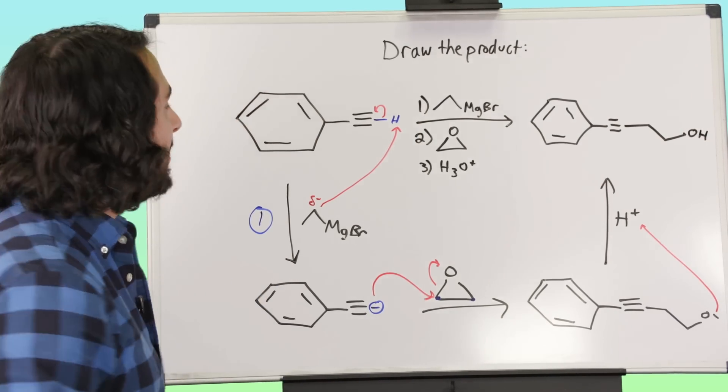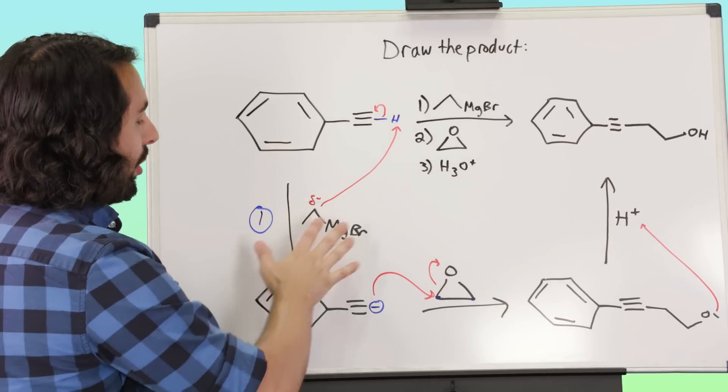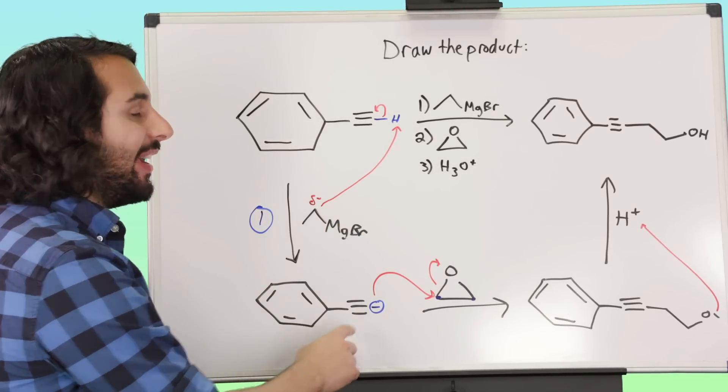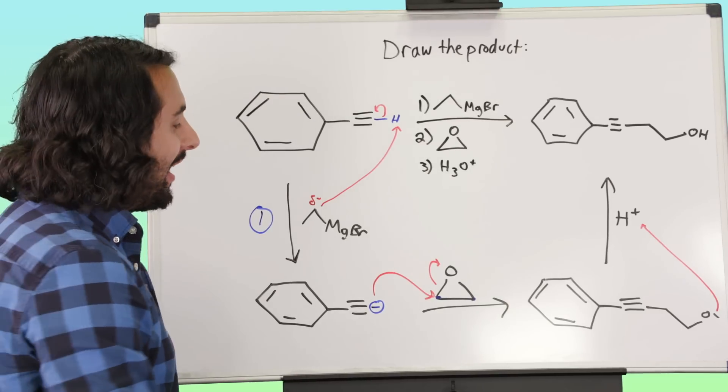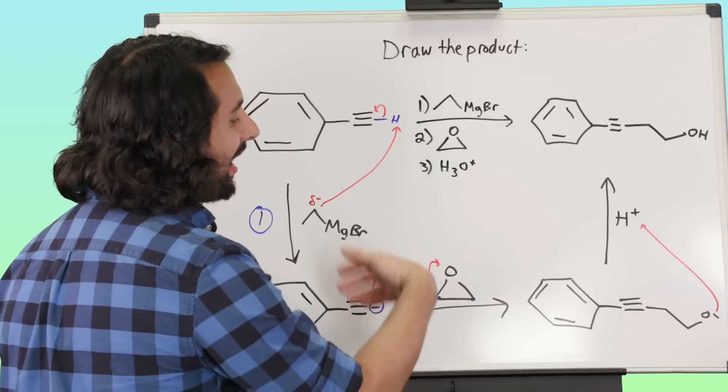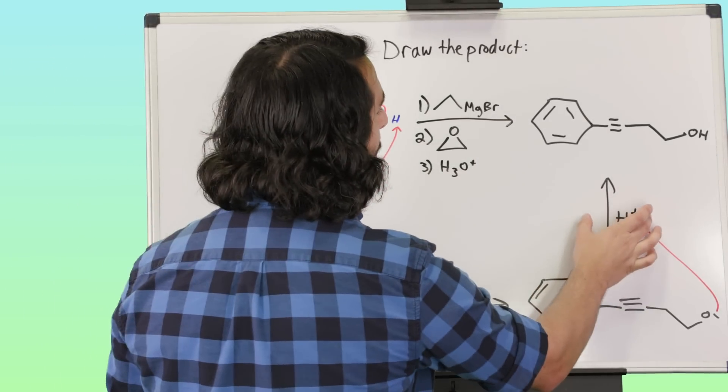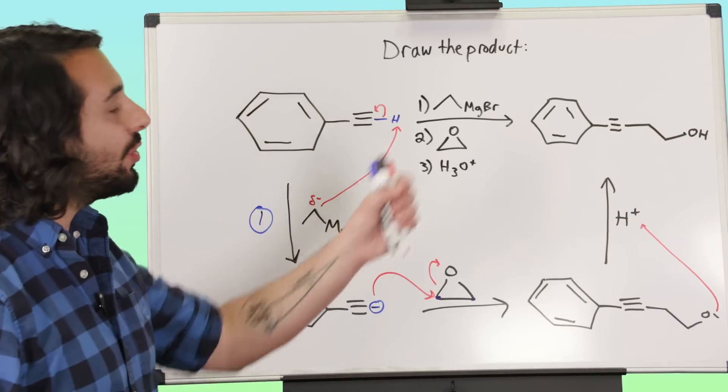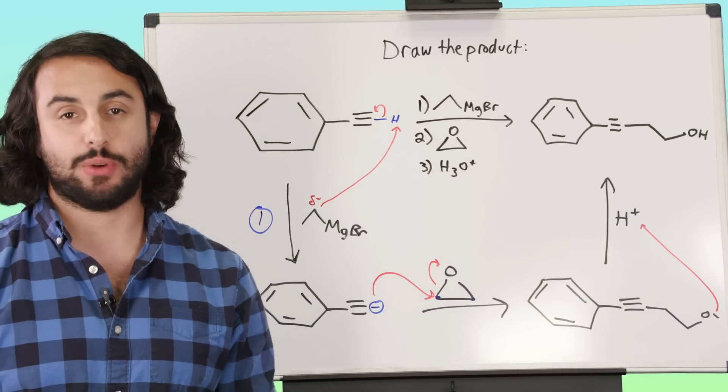So this is an interesting sequence here, we did something unorthodox with the Grignard reagent to prepare the acetylide ion, we used the acetylide ion to attack this epoxide, pop it open, and then simply protonated to get this hydroxyl group on there. So that is going to be the product of this sequence of reactions.